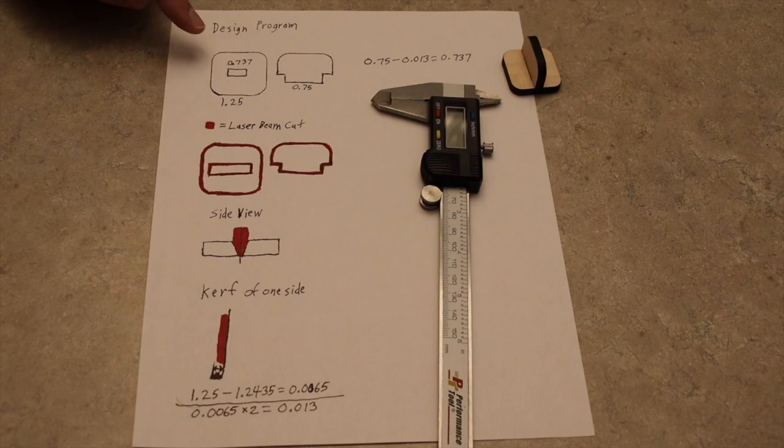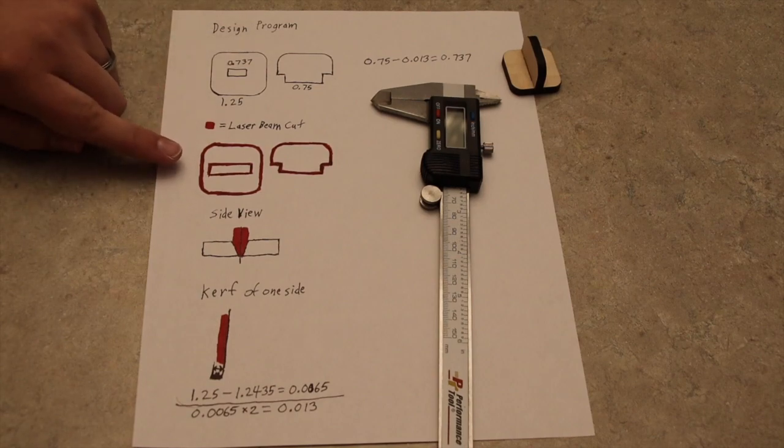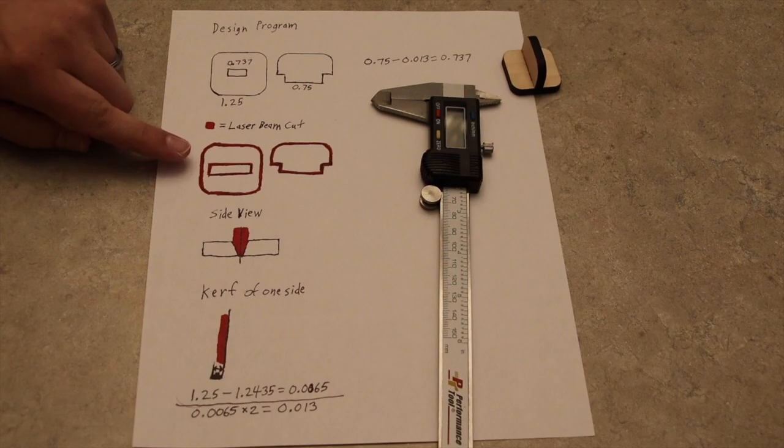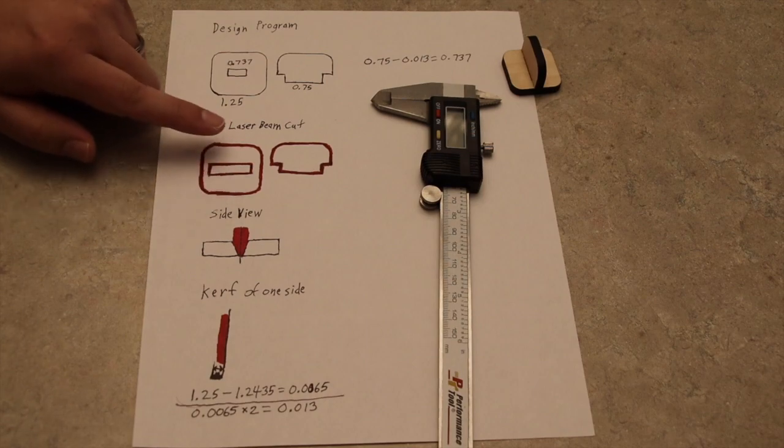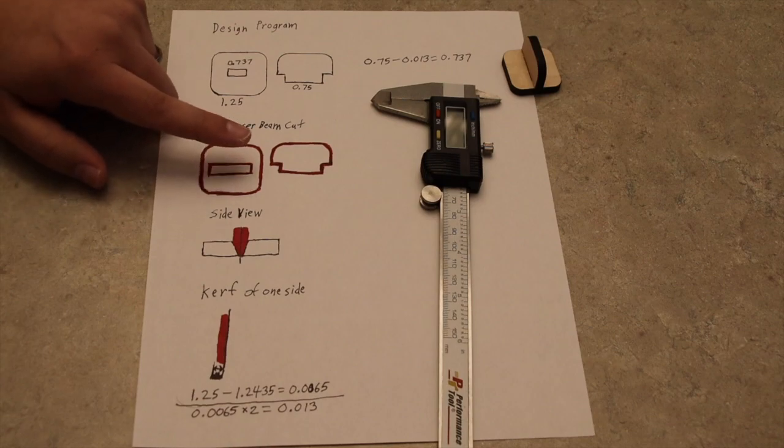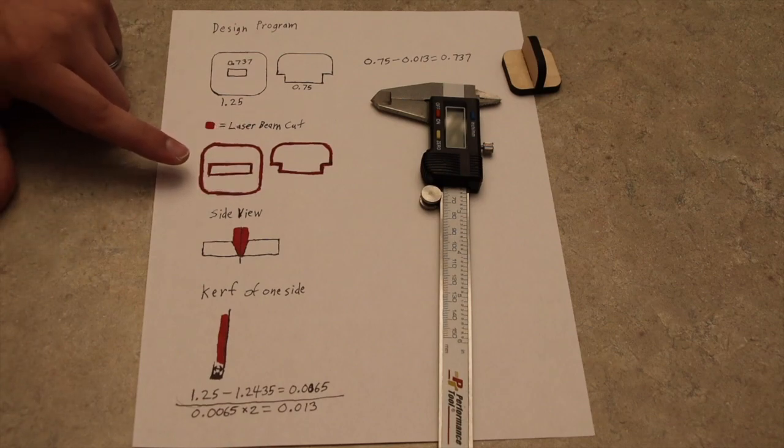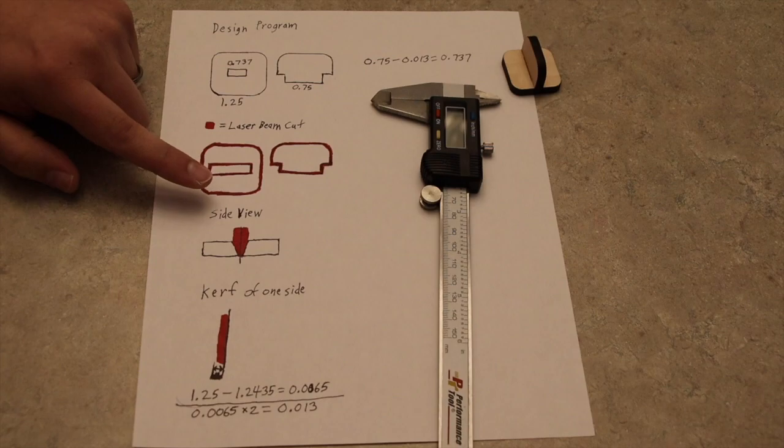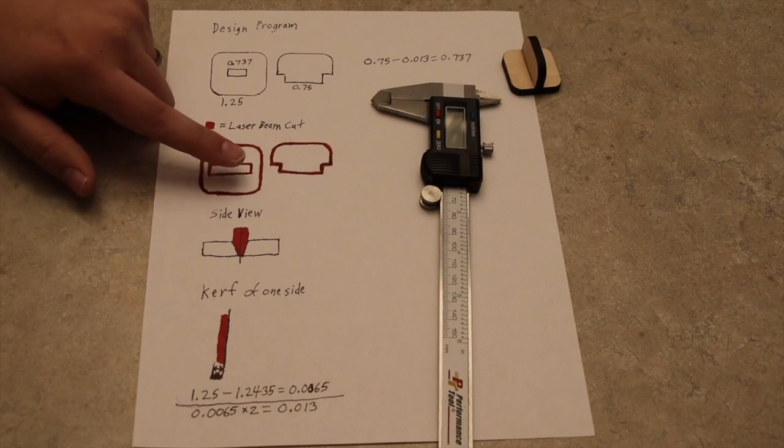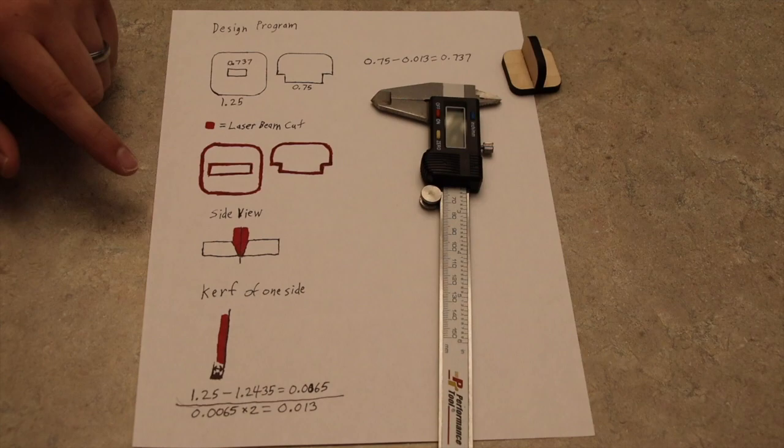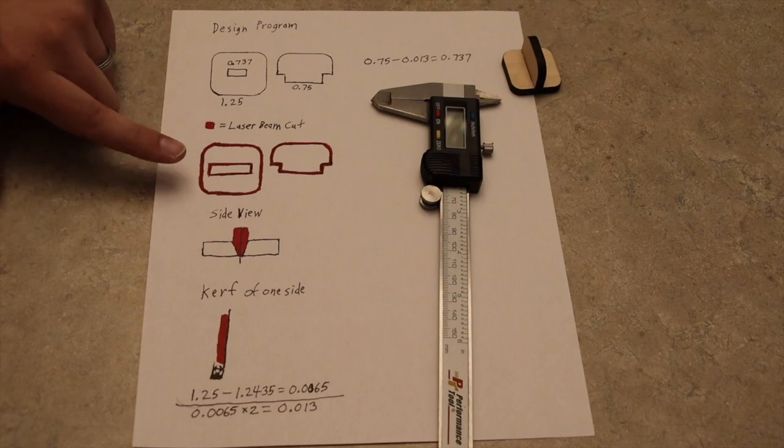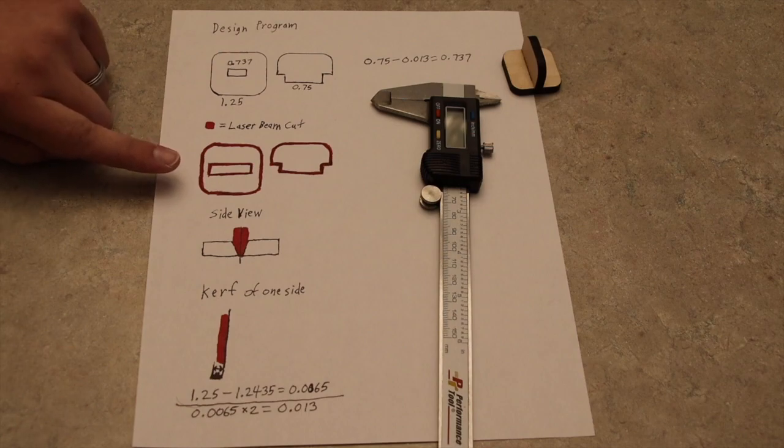We're going to take this design and send it to the laser. The black inline of this red part here is the design that you imported, and the red is the laser beam itself. As you can see, the laser beam is wider than the actual line that you inputted, and that's going to cause wiggle room. That's what's considered your kerf.